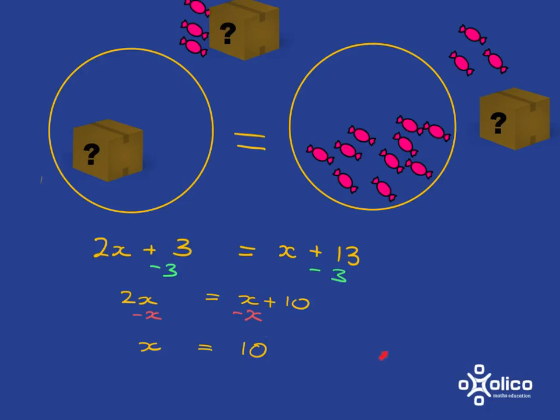So this is the process of solving an equation where you've got x's on both sides. Your aim is to get just x's on this side and just numbers on that side. We'll look at a couple more examples of how to do that.